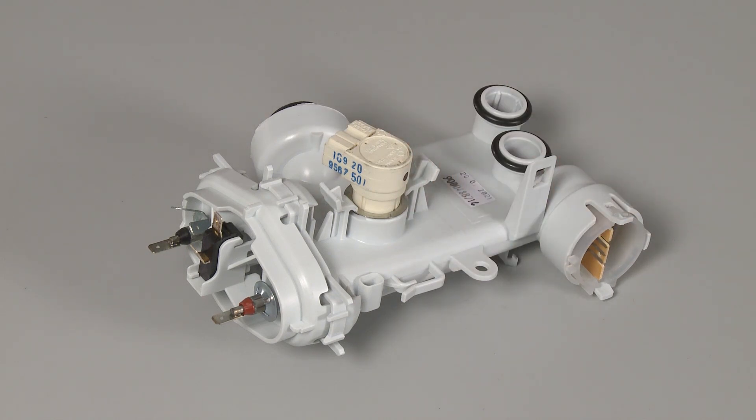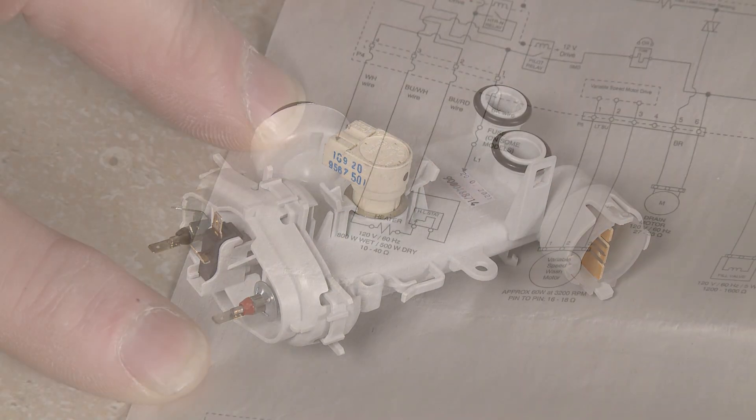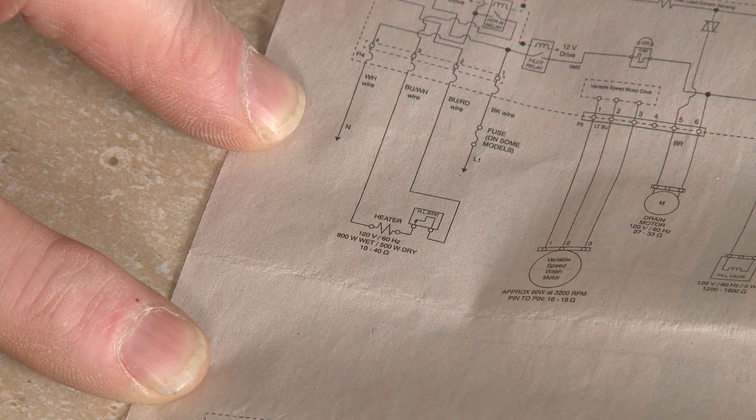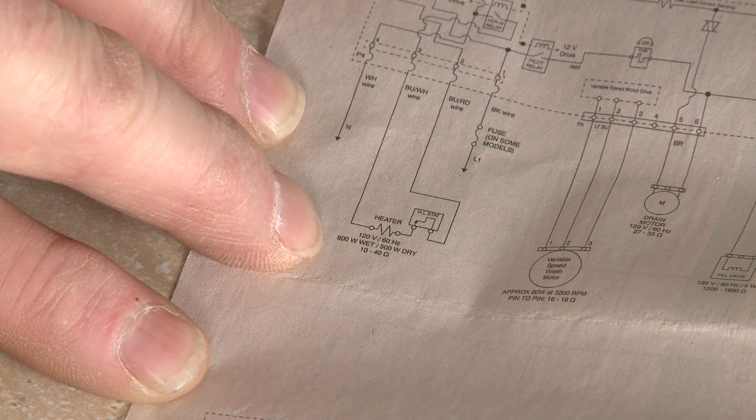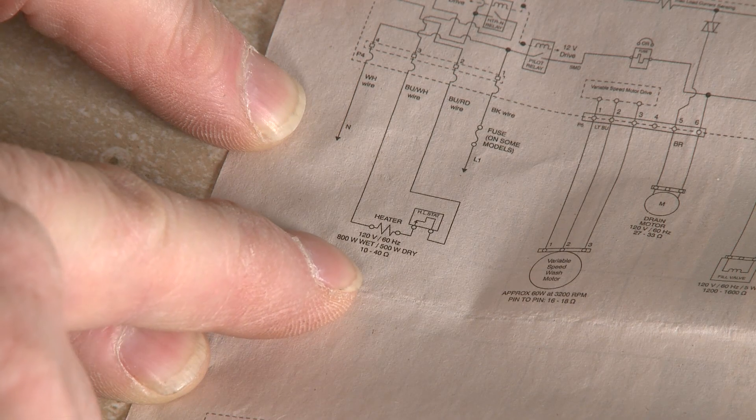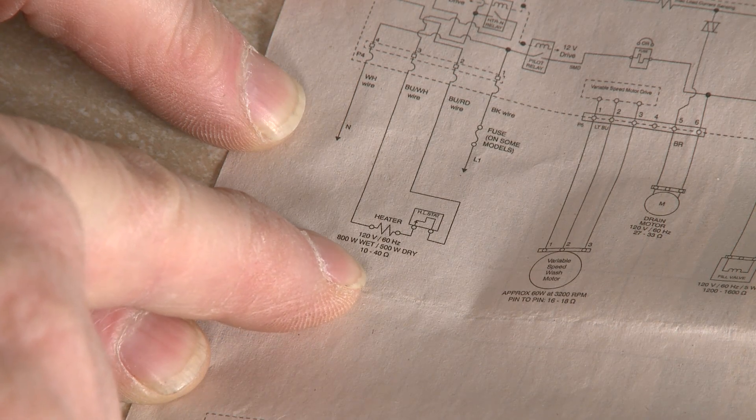Once you've reached the component, refer to the appliance's wiring diagram to identify the heater's input and output terminals or pins, as well as the designated ohms of resistance for those terminals.